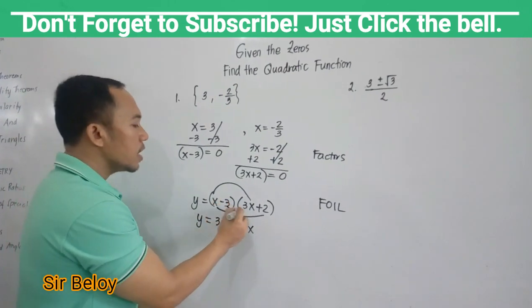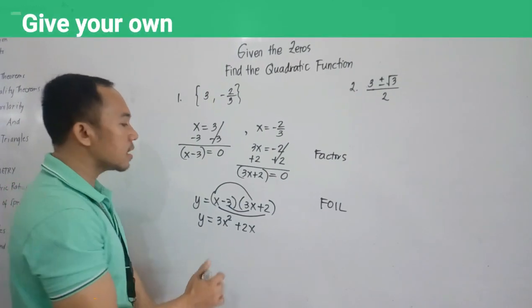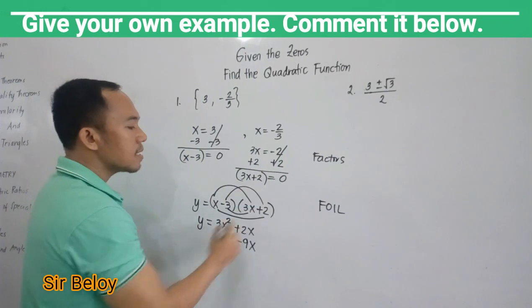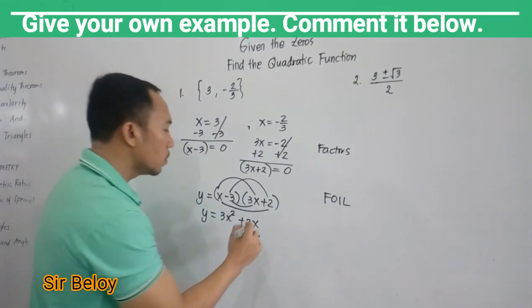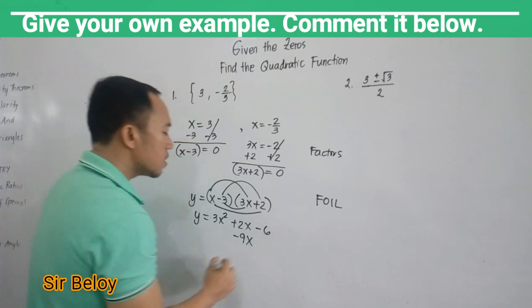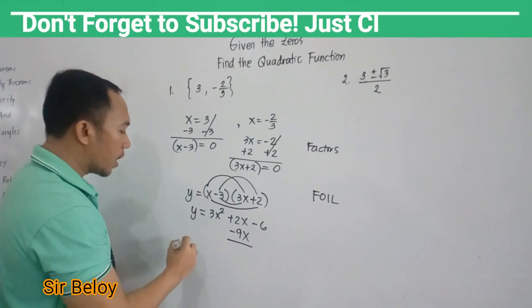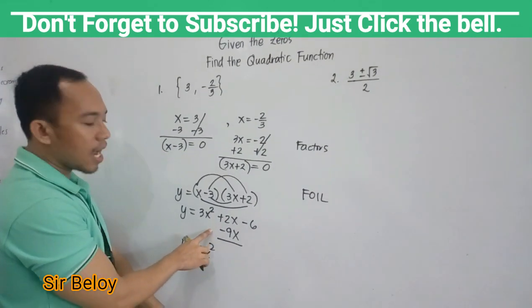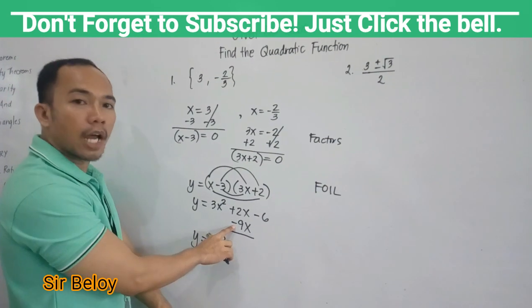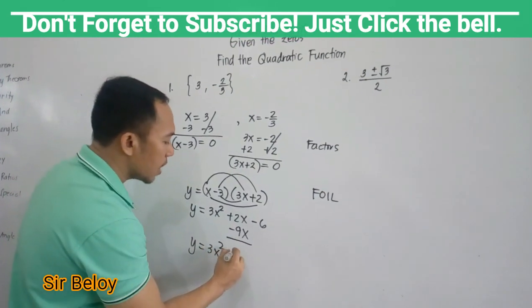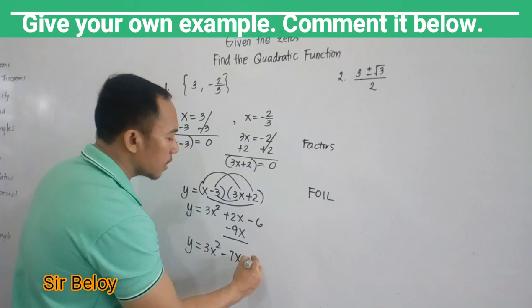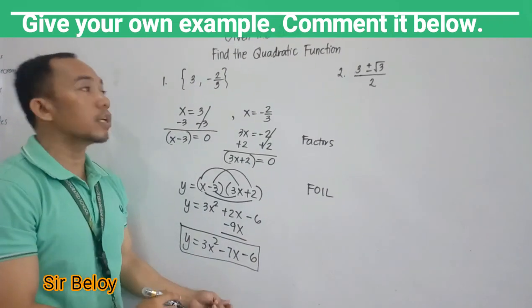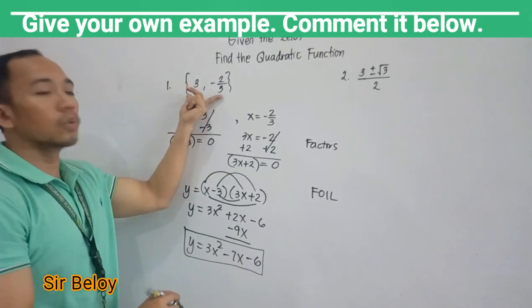And for inner, you have negative 3 times positive 3X. You have negative 9X. And for last, you have negative 3 times positive 2. So this is negative 6. Combine the outer-inner part. So you have Y equals 3X squared. Since different sign, you need to subtract and copy the sign of the higher absolute value. We have negative 7X, then copy negative 6. So this is now your quadratic function out of these two zeros.